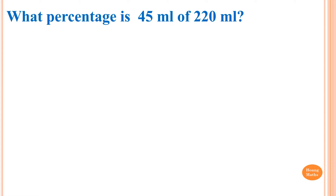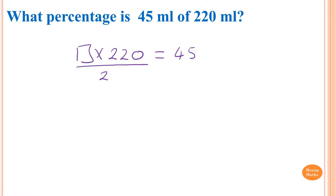What percentage is 45 milliliters of 220 milliliters? This means that a percentage times 220 gives me 45. So to work out what percentage it is, this is just like equations — if I divide by 220 on both sides, this cancels out so we can find out what this one is.